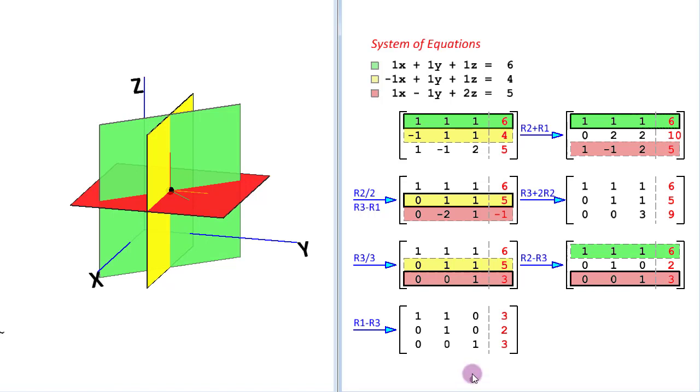Finally, the last row operation that will get us 0 here, we will take row 1 and subtract row 2 from it. Here is the row operation and the resulting matrix and we got the unit matrix we were looking for over here. So, this is the solution.